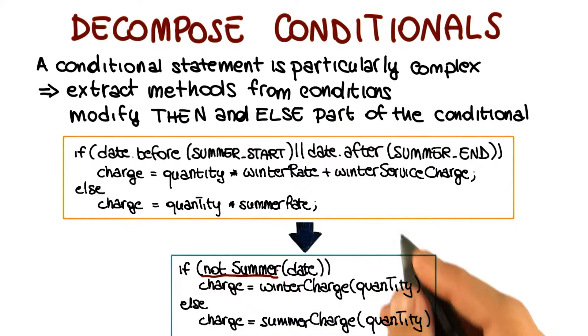So as you can see here, there's a clear improvement in the code, because here I just need to look at this statement, and I see right away that the check, what the check is doing is just checking whether the date is in the summer or not. So much easier than having to interpret this condition.